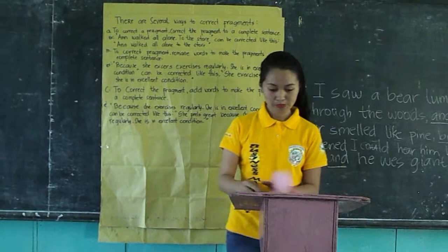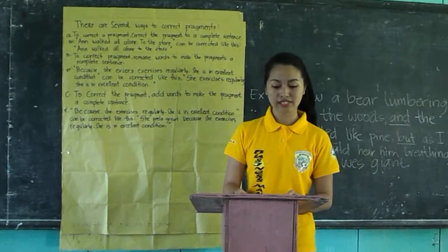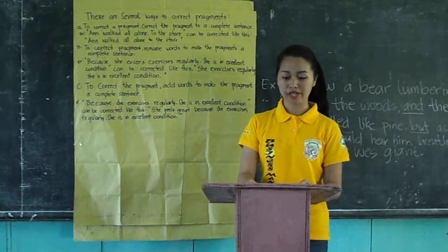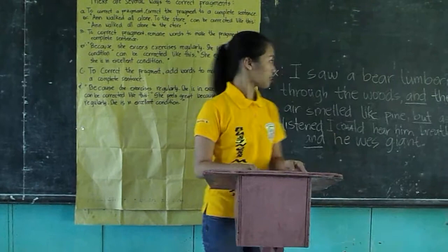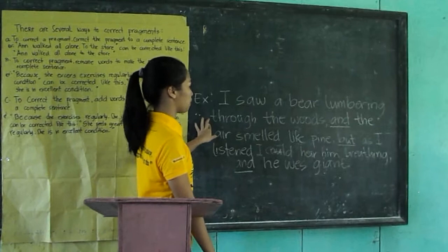The next topic is all about the rambling sentence. A rambling sentence may appear to follow the technical rules of grammar in places, but the sentence as a whole is wrong because it rambles. Example: 'I saw a bear lumbering through the woods, and the air smelled like pine, but I missed it, and with her in writing, and it was giant.'